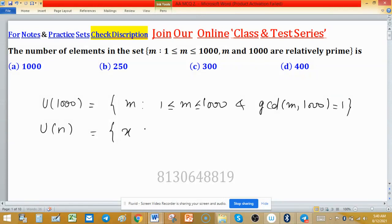In U(n), all those natural numbers will come which are less than n and gcd(x, n) = 1. This set U(n) forms a group under multiplication modulo n.